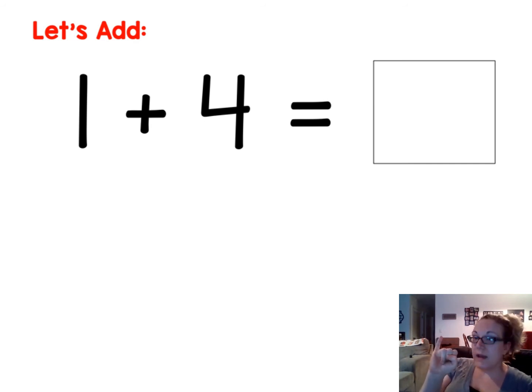Now when I count up, I just think what comes next? So four, what comes next? Five. So four plus one or one plus four equals five. The sum is five.